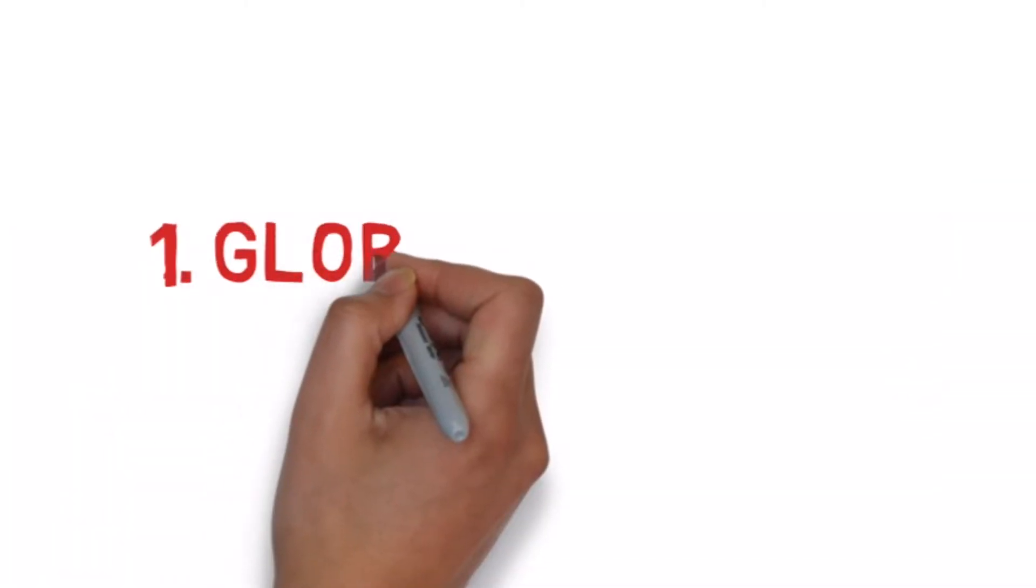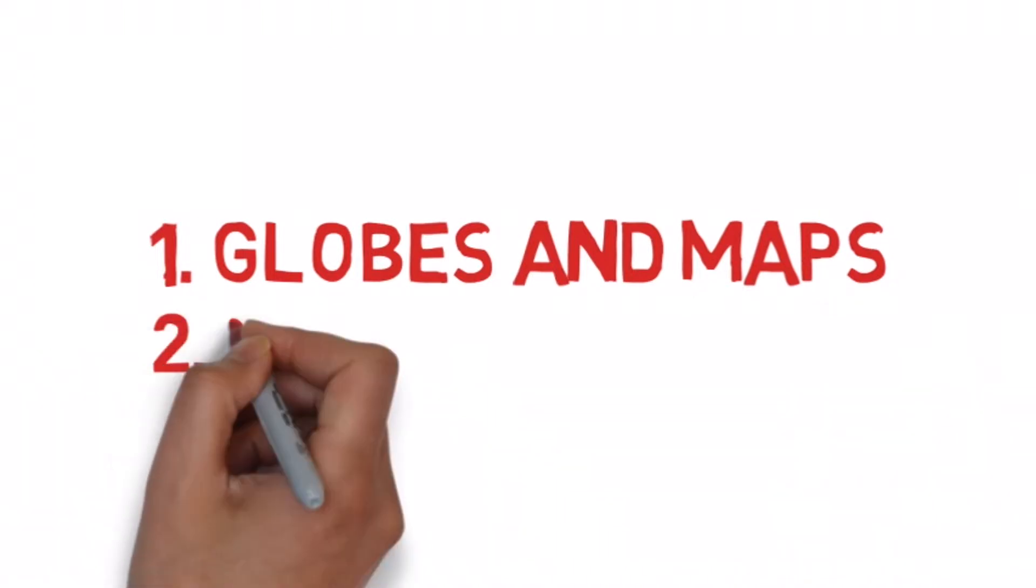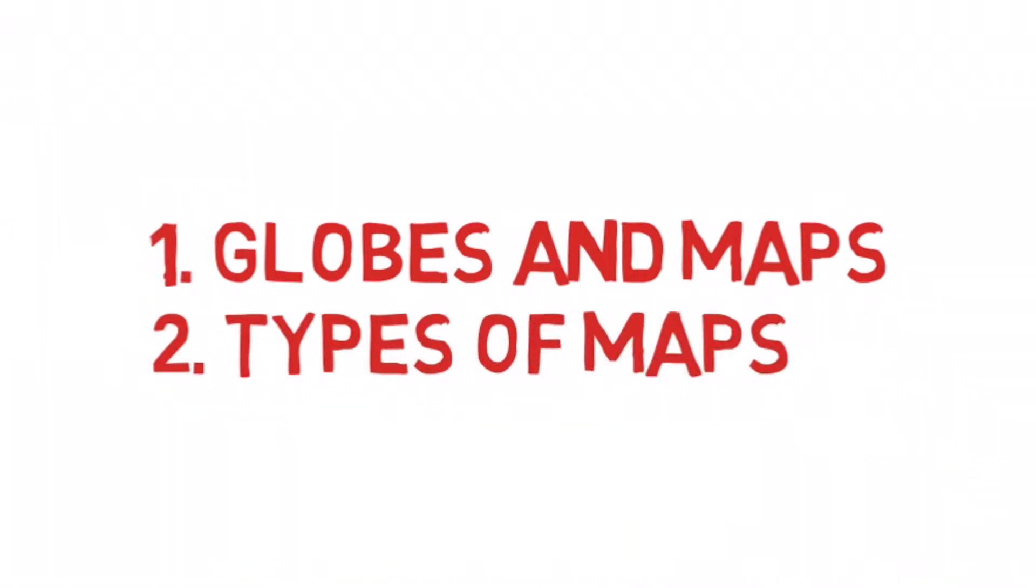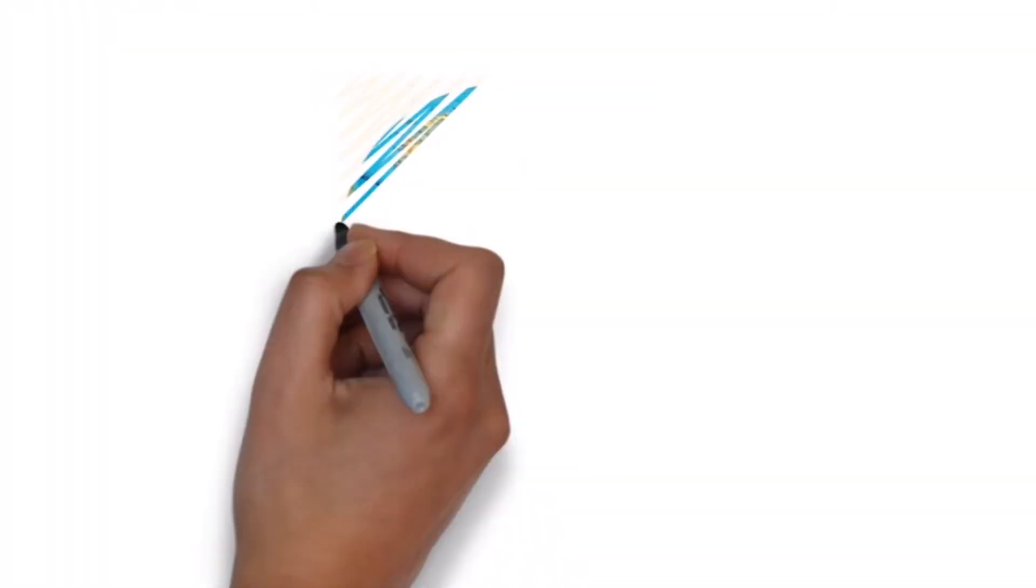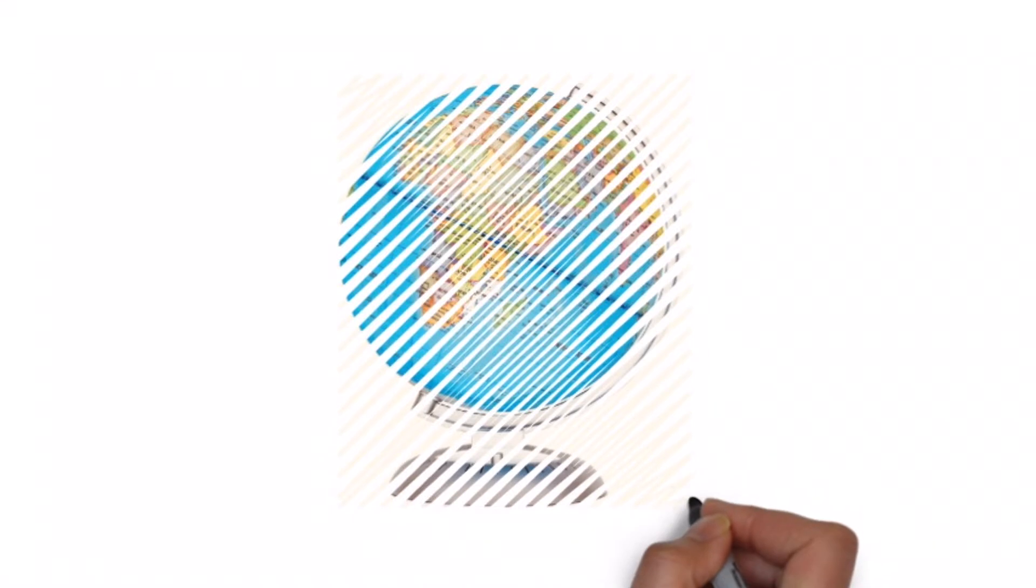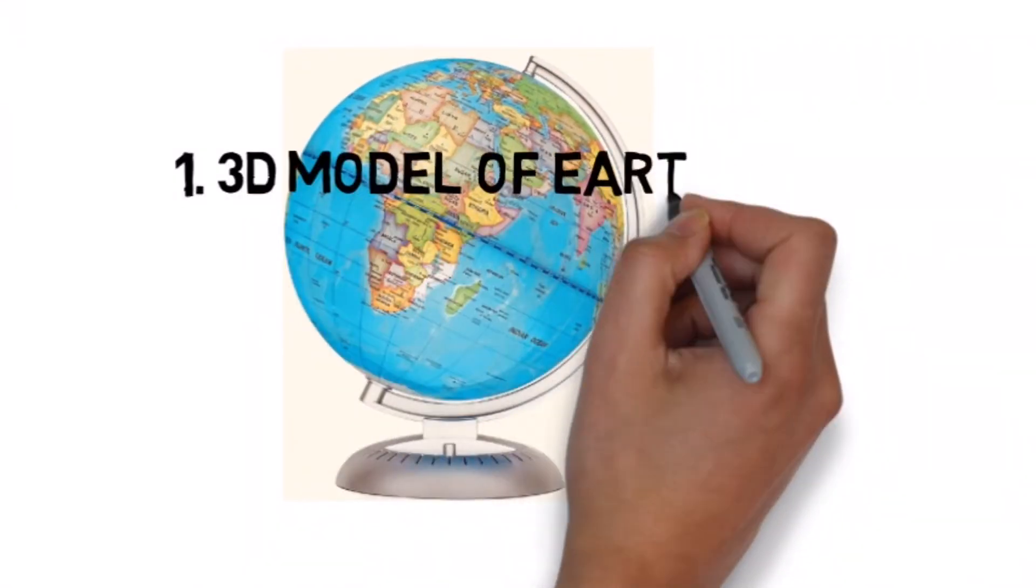In this module we are going to learn about the differences between a globe and a map and also the different types of maps. So let us begin with what is a globe. A globe is a three-dimensional model of the earth. It helps us to learn about the distribution of land and water on this planet.